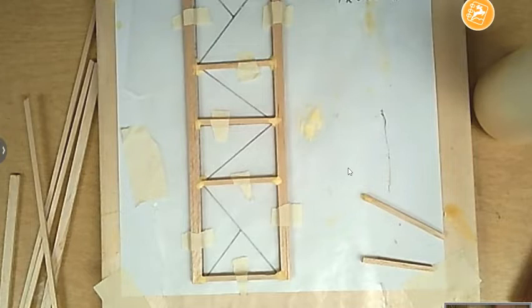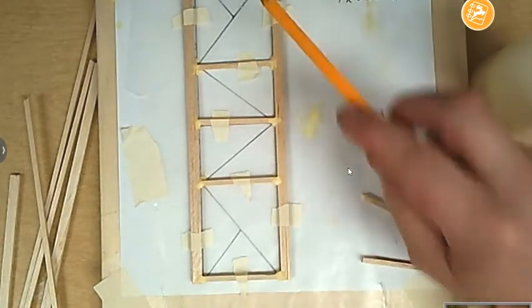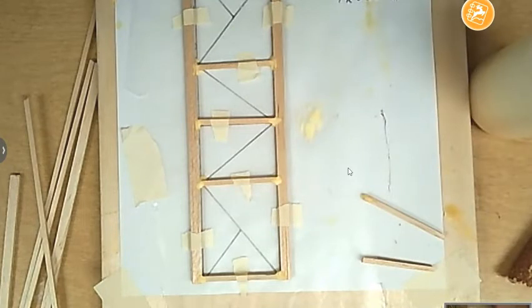All right, through the magic of video, I now have all five of these horizontal pieces going across my tower. The glue is drying.